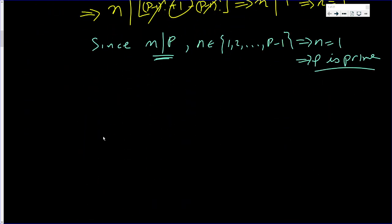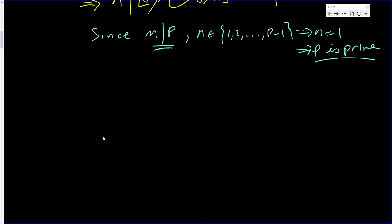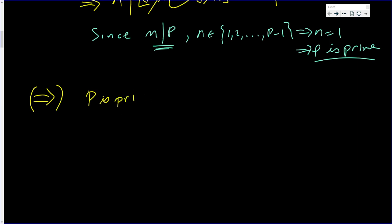Now we go in the other direction, which is essentially proving Wilson's Theorem. We're going to assume that p is prime. To use the proof I'm going to do, we need to handle two separate cases.